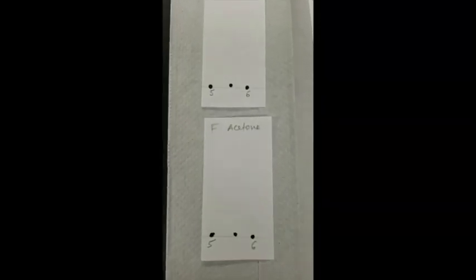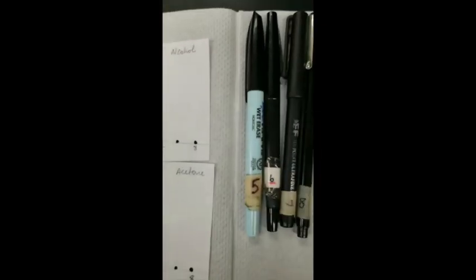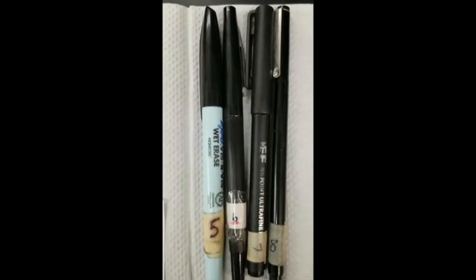In this frame, you see the papers for known F just right before placing them into the mobile phase. You also see the reference pens that were used to place the dots on these papers.